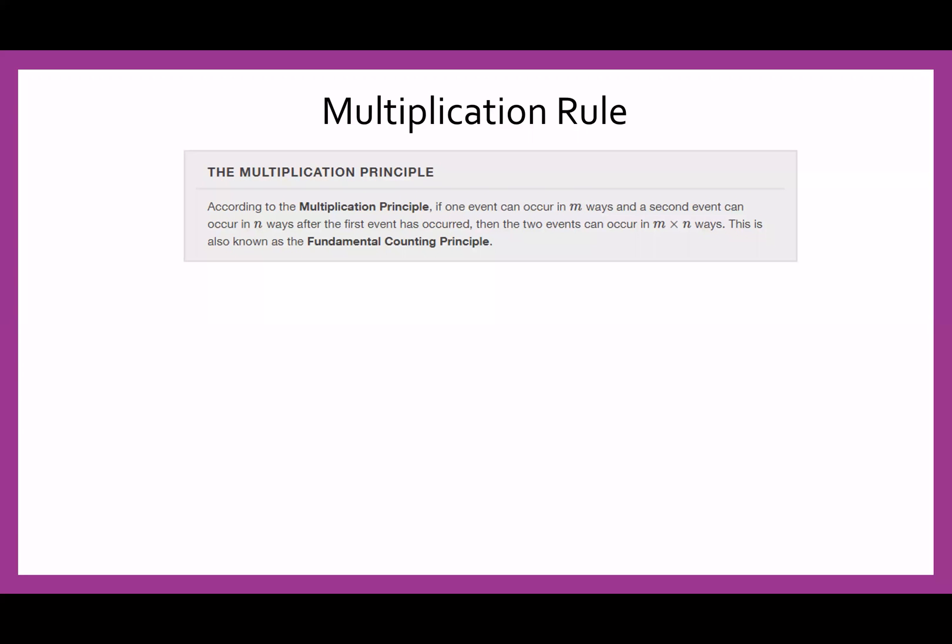The multiplication rule or the multiplication principle is one where you have a first event and a second event. So if one event can occur in m ways and a second event can occur in n ways after the first event, then the two events can occur in m times n ways. So let's check out an example here.